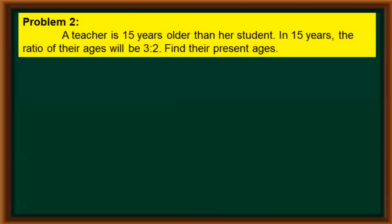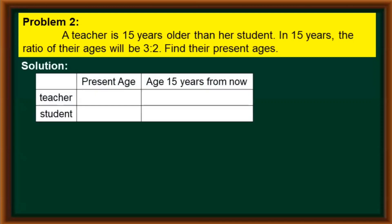Let us now have our second problem. A teacher is 15 years older than her student. In 15 years, the ratio of their ages will be 3 is to 2. Find their present ages. For our solution, we do the same thing — we summarize the given data using a table. A teacher is 15 years older than her student, so if we let the student's age equal x, the teacher's age would be x plus 15. We simply add 15 to get their ages 15 years from now.